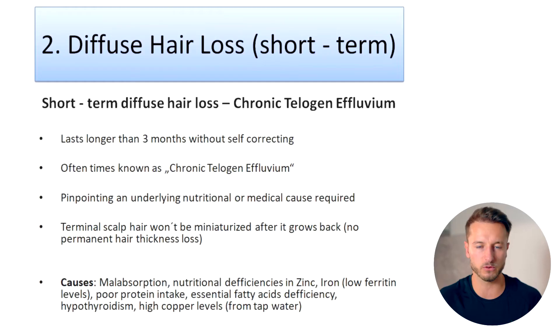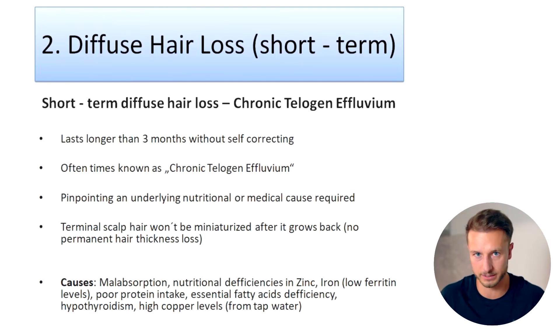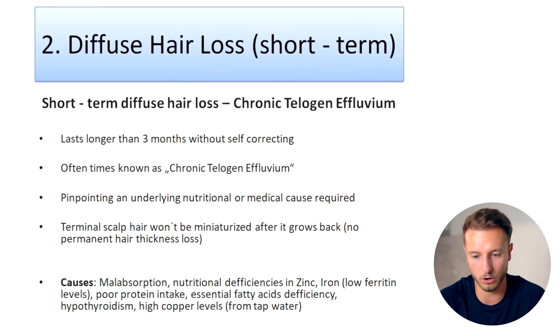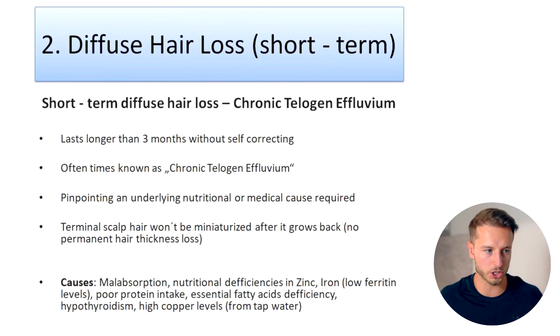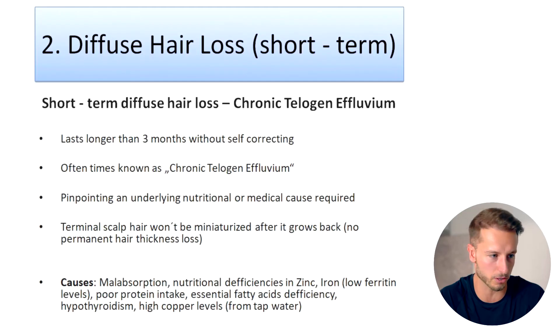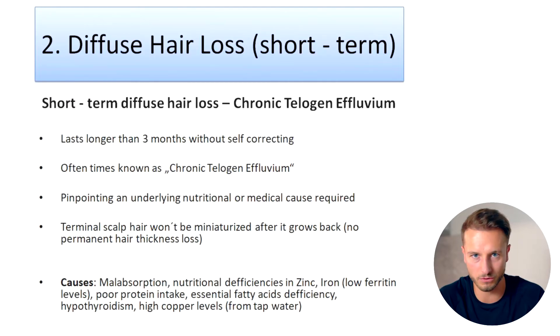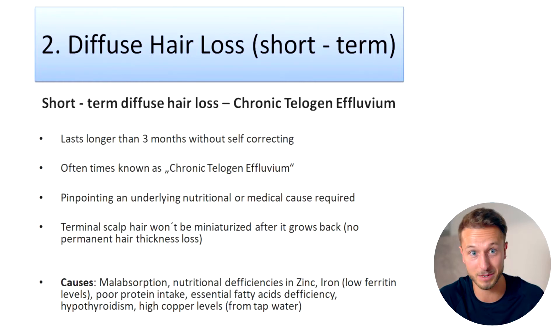The second type of diffuse hair loss is often referred to as chronic telogen effluvium — it's chronic because it lasts longer than three months and it's not self-correcting. You need to intervene and address either an underlying medical or nutritional condition which is causing it. It occurs more often in women than men, and diagnosing the cause can be tricky because the causes can be many.